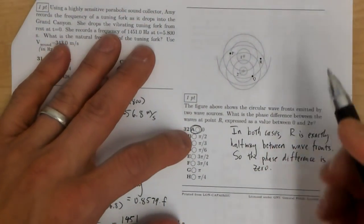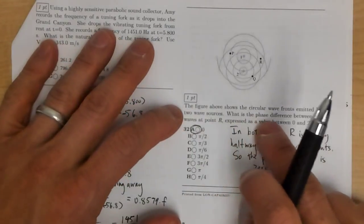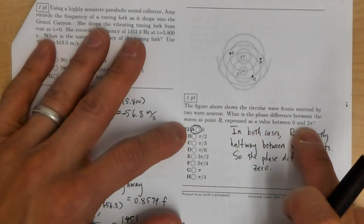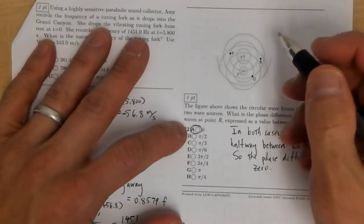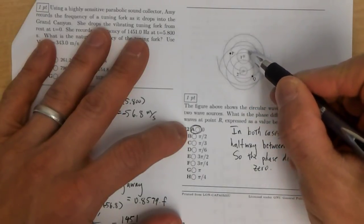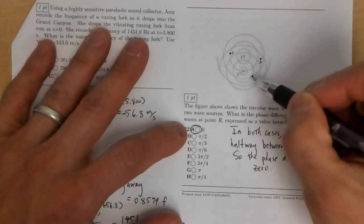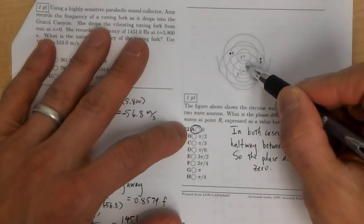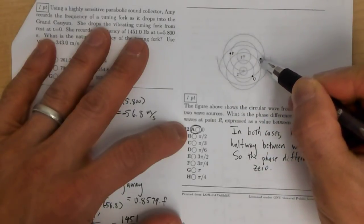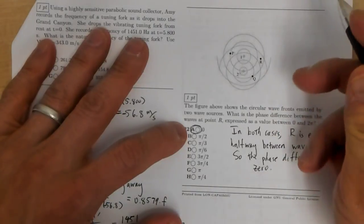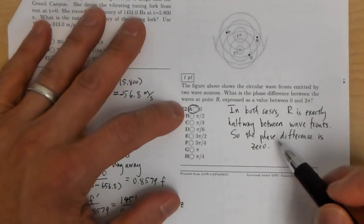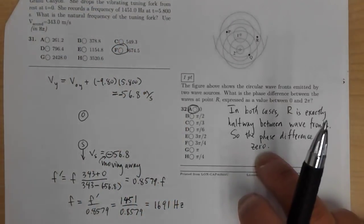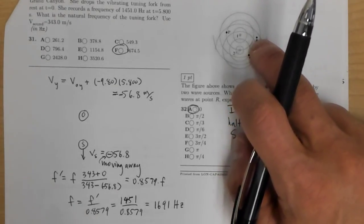For the last problem, we look at circular wave fronts emitted by two wave sources. At point R, the waves from source 1 are in between two crests, and the waves from source 2 are also halfway between two crests. Since both waves are at the same phase position relative to their crests, the phase difference between the two waves at point R is zero.